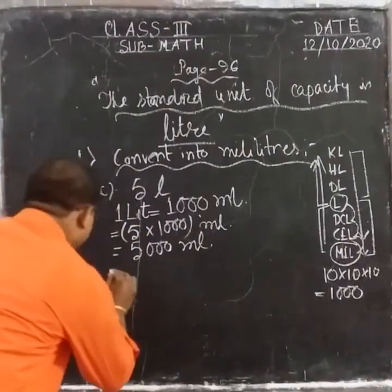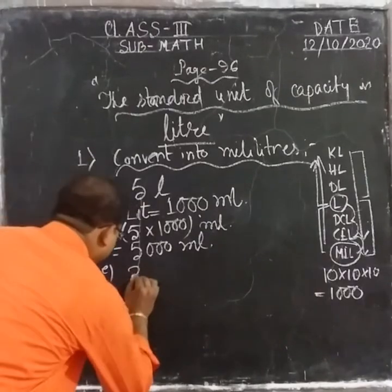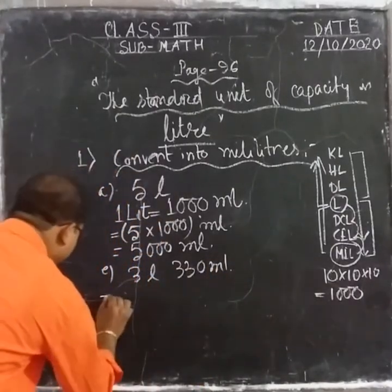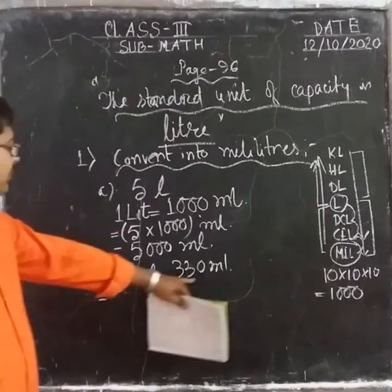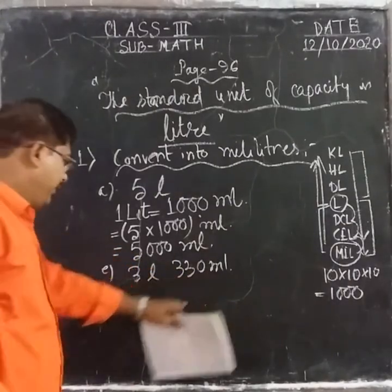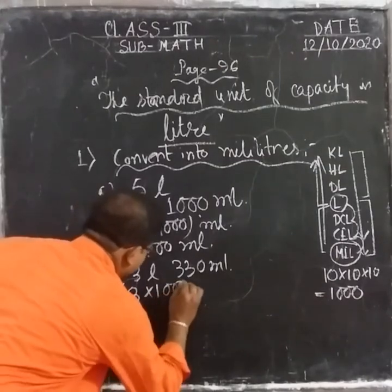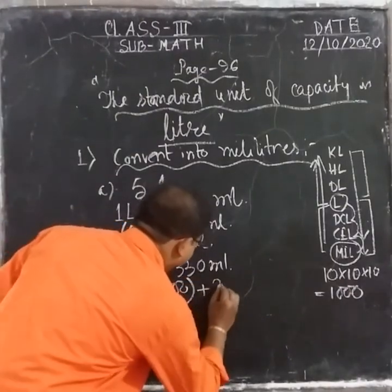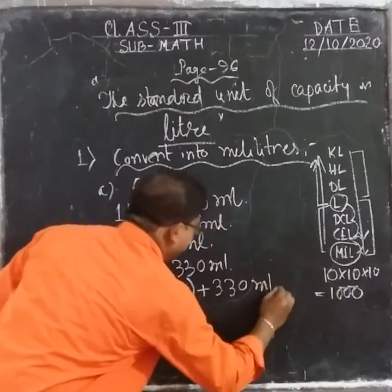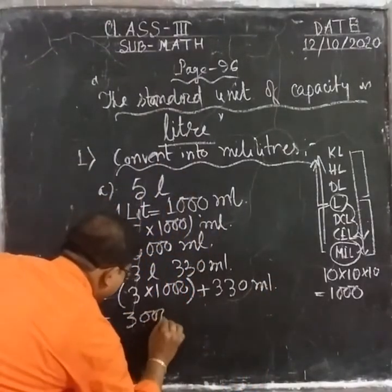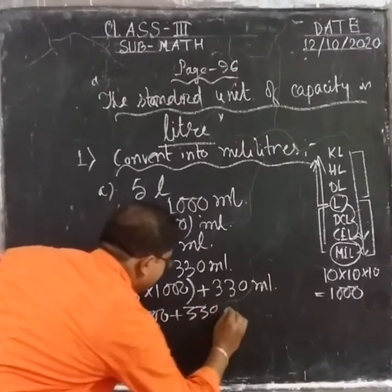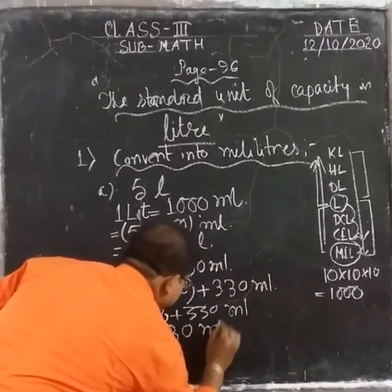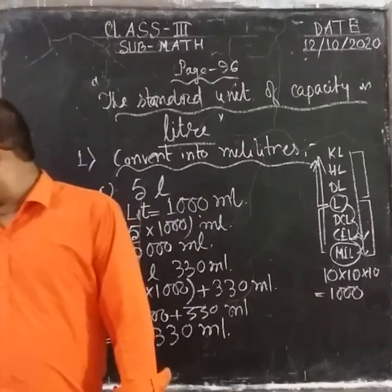In another example, the question gives 3 liters and 330 milliliters. First convert the liters into milliliters: 3 × 1000 = three thousand milliliters. Then add the remaining milliliters: 3000 + 330 = three thousand three hundred and thirty milliliters. That is the answer.